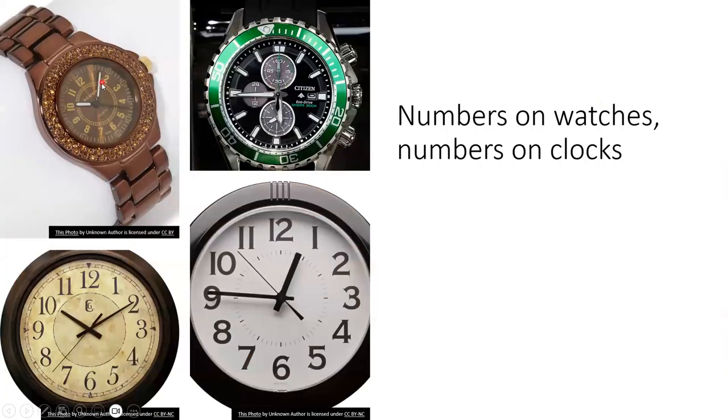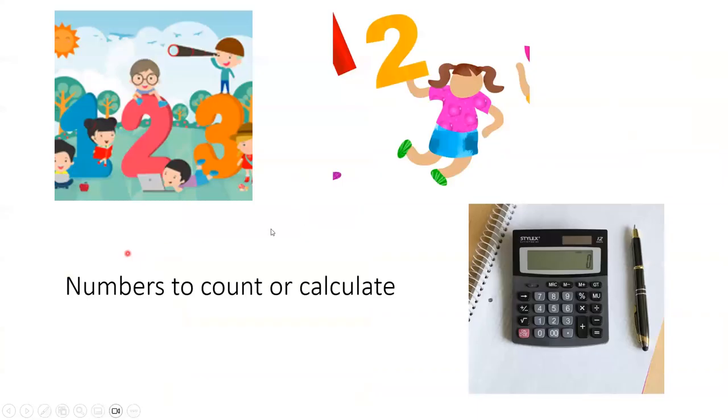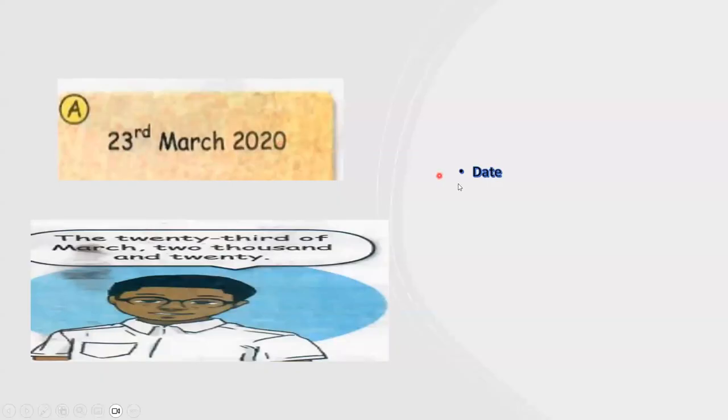Numbers on watches. This is the watch which we wear on our hand. And numbers on clocks, the clocks which we put on the wall in our house. Numbers to count or calculate. We can count: one, two, three, four. We can count the numbers. And the date, it's the 23rd of March 2020.